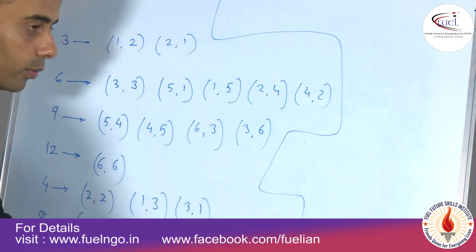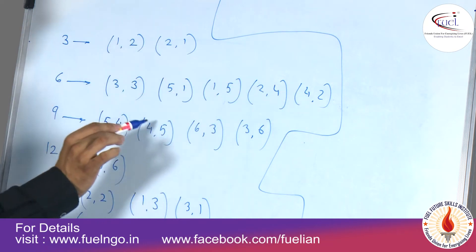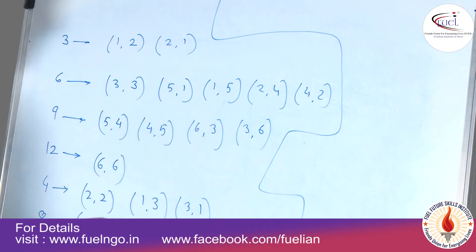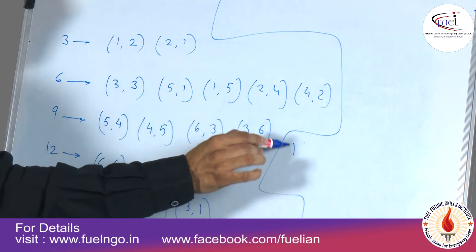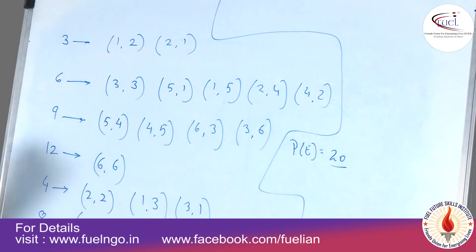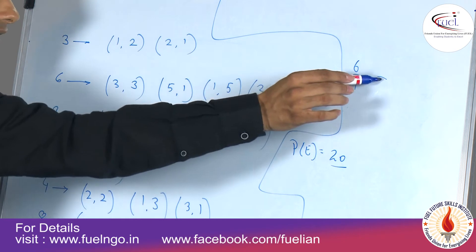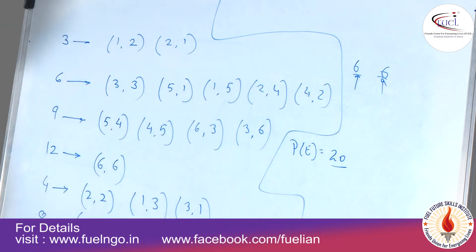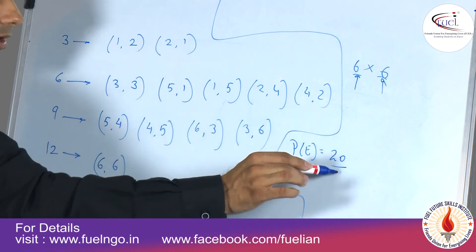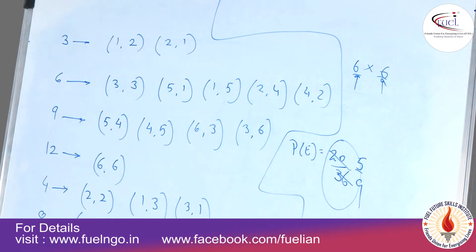If you count all these favorable outcomes, you get twenty. The probability of the event is favorable outcomes over total outcomes. When throwing two dice, each die has six possible outcomes, so total outcomes are 6 × 6 = 36. Favorable outcomes are 20 out of 36, which simplifies to 5/9. So the probability of getting a sum that is a multiple of three or four is 5/9.